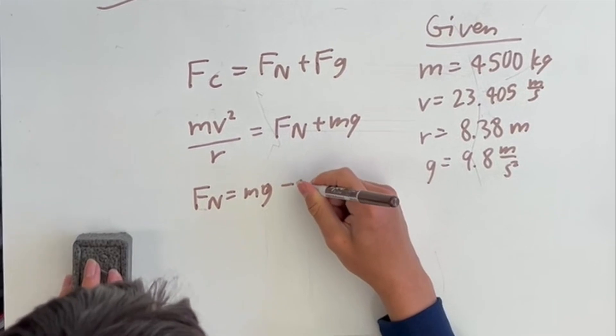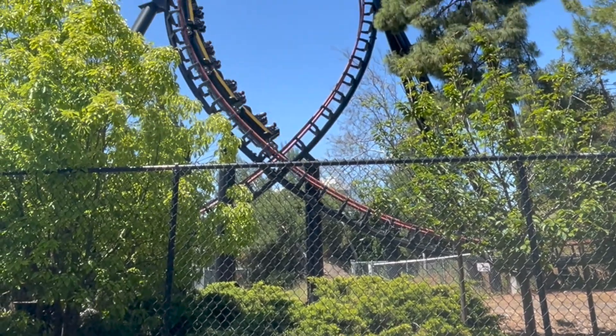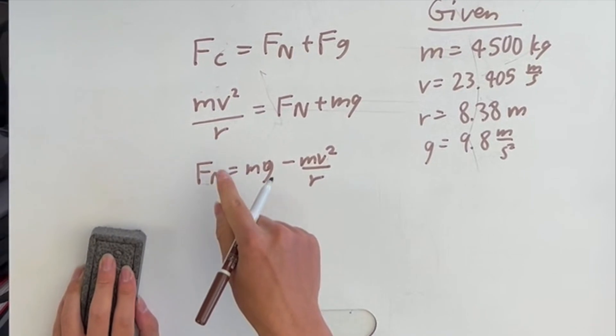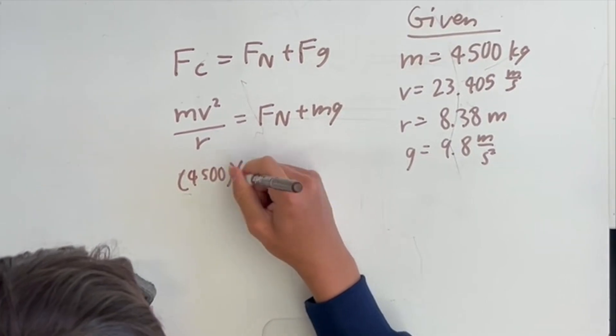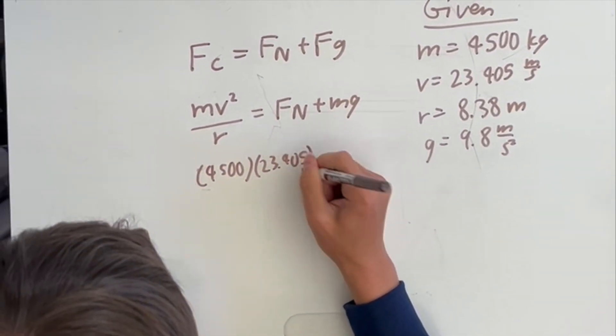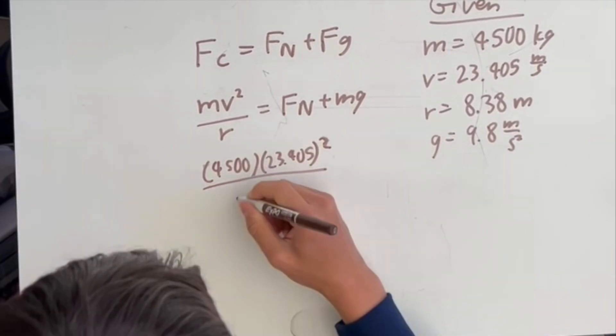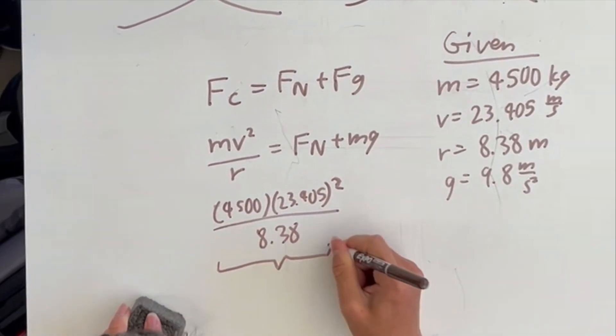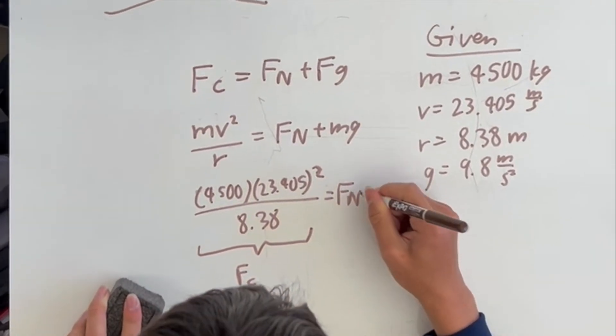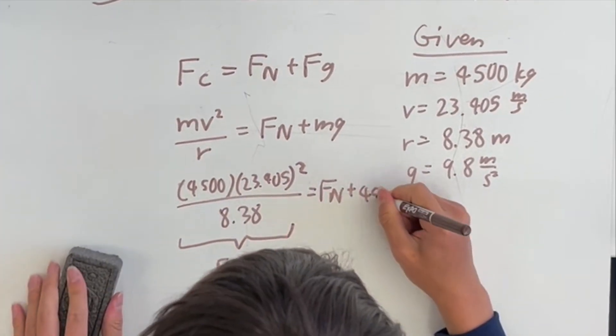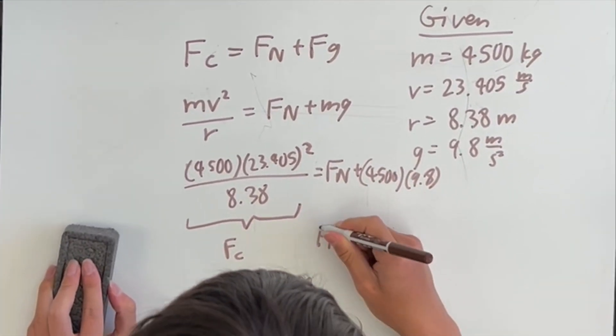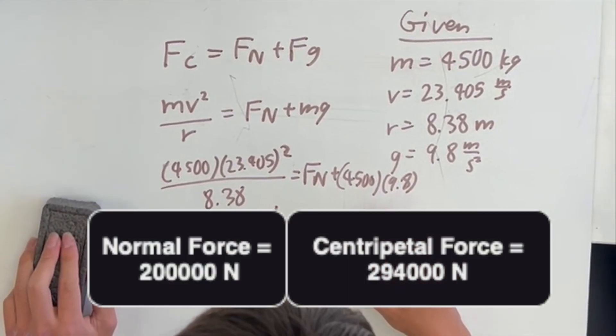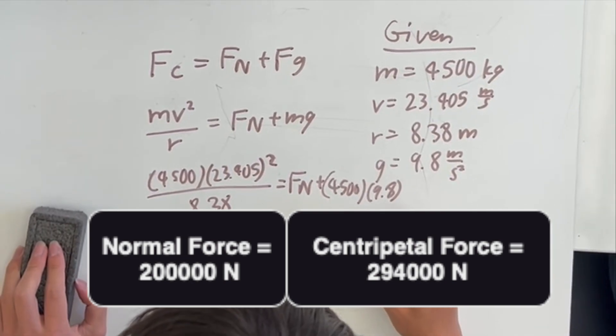And right now, so we are plugging in our values. And the first term here is equal to the centripetal force. And then here, we're also trying to solve for the normal force from the rails on the cart. And then the normal force is 2 times 10 to the 5 Newtons. And the centripetal force is 2.94 times 10 to the 5 Newtons.